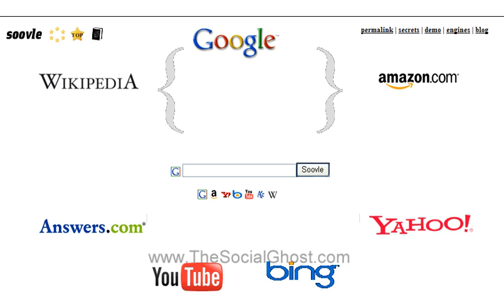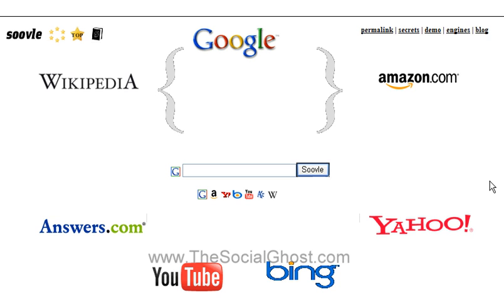Let me show you how it works. When you come over here to soovle.com, you're going to see a whole bunch of different sites, along with the Soovle search area right here. What you can do is type in your keyword, and as you do that, all these different services are going to start showing you results based on what you're typing. It's pretty cool, so let's go ahead and get started.